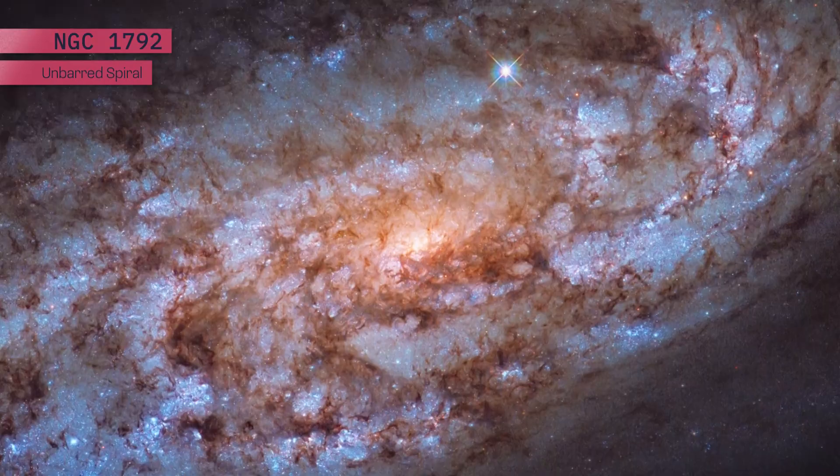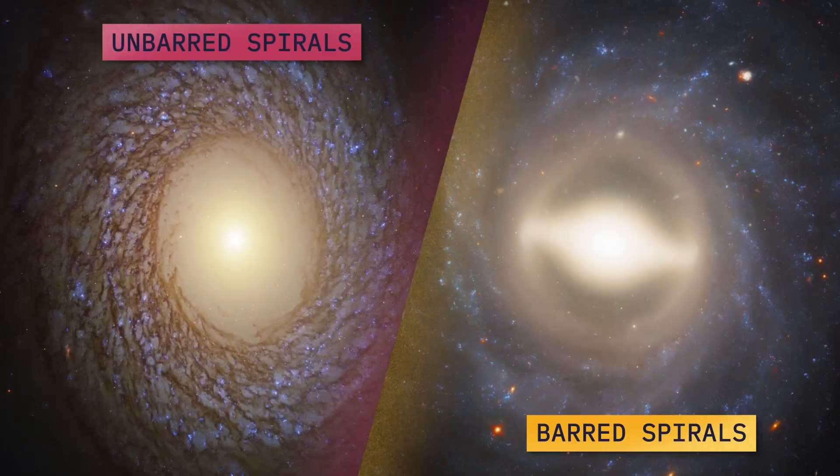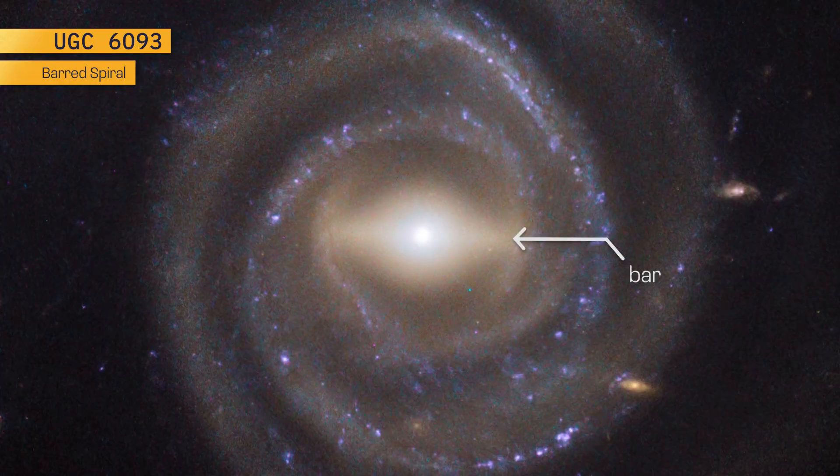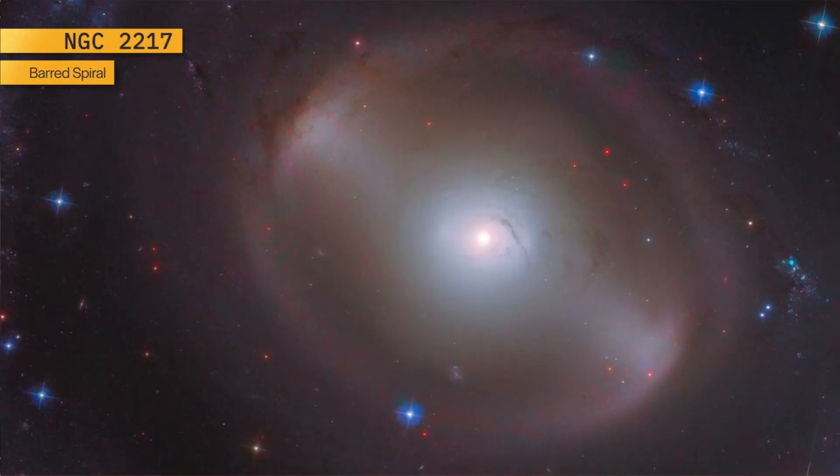Spiral galaxies are subdivided into unbarred and barred, and organized by the size of their central bulge and how tightly their arms are wound. Bars form in spiral galaxies when star orbits become unstable and stretched out. As their orbits lengthen, they create a bar, which grows as gravity captures more nearby stars.